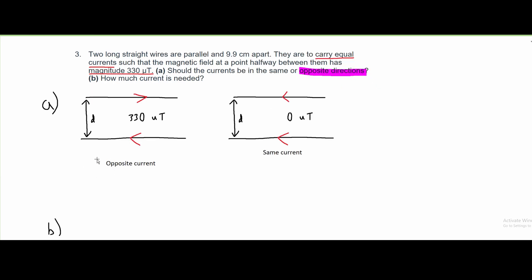For part B, we are asked how much current is needed. To find current, we need to use the formula that involves magnitude. This formula for an infinite wire is that B is equal to μ₀ times the current I over 2πR. Since we have two wires in here, we can multiply this by 2.